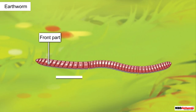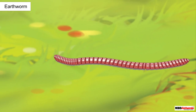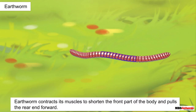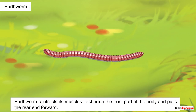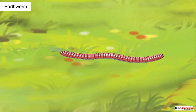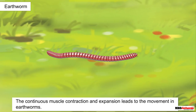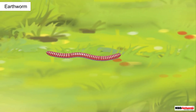When the earthworm moves, it first extends the front part of its body by expanding the muscles. Simultaneously, it fixes the rear part of the body to the ground firmly. After the first part is extended, it releases the rear part. It then contracts its muscles to shorten the front part of the body and pulls the rear end forward. As a result, it moves forward a short distance. Such continuous muscle contraction and expansion leads to the movement in earthworms.